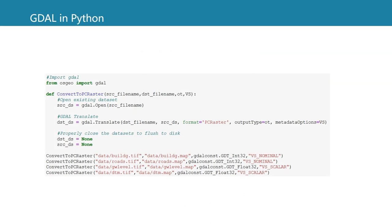Later in this course, you will also learn how to use GDAL as a library in Python to do all kinds of conversions. In this example on the screen, you can see how we convert GeoTIFFs to the PC Raster format. You can see that it's almost human readable. Don't worry — you will learn more about this later.